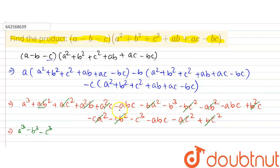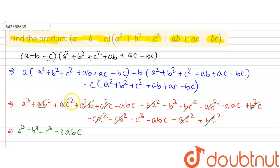The remaining terms are minus abc, minus abc, minus abc, which equals minus 3abc. Therefore, the product of (a minus b minus c) with (a square plus b square plus c square plus ab plus ac minus bc) is equal to: a cube minus b cube minus c cube minus 3abc.